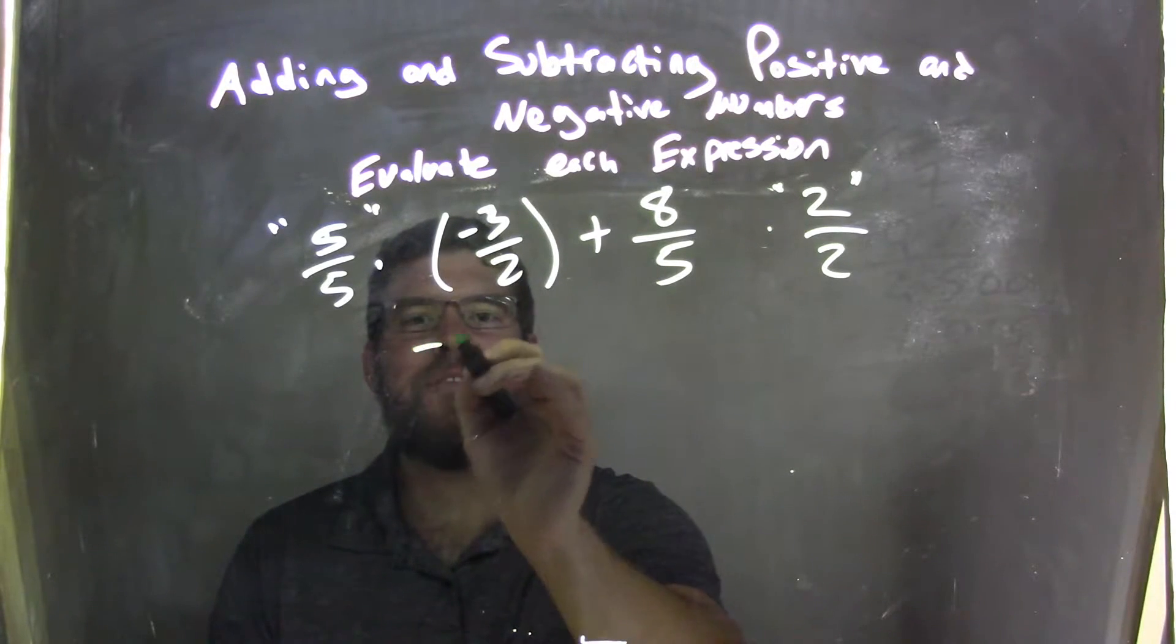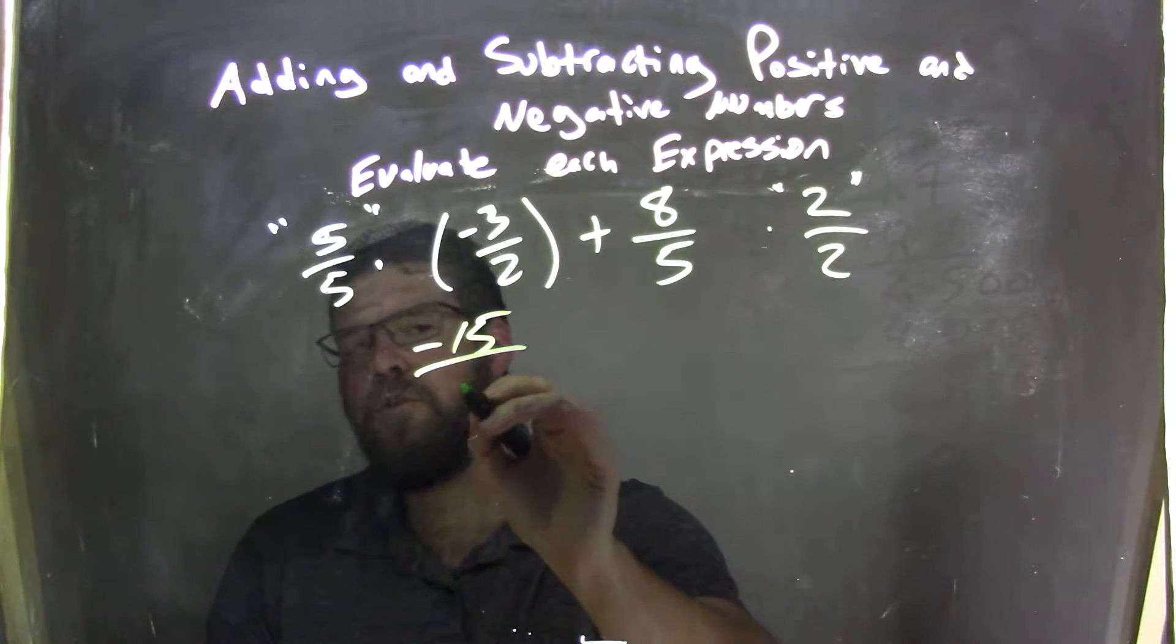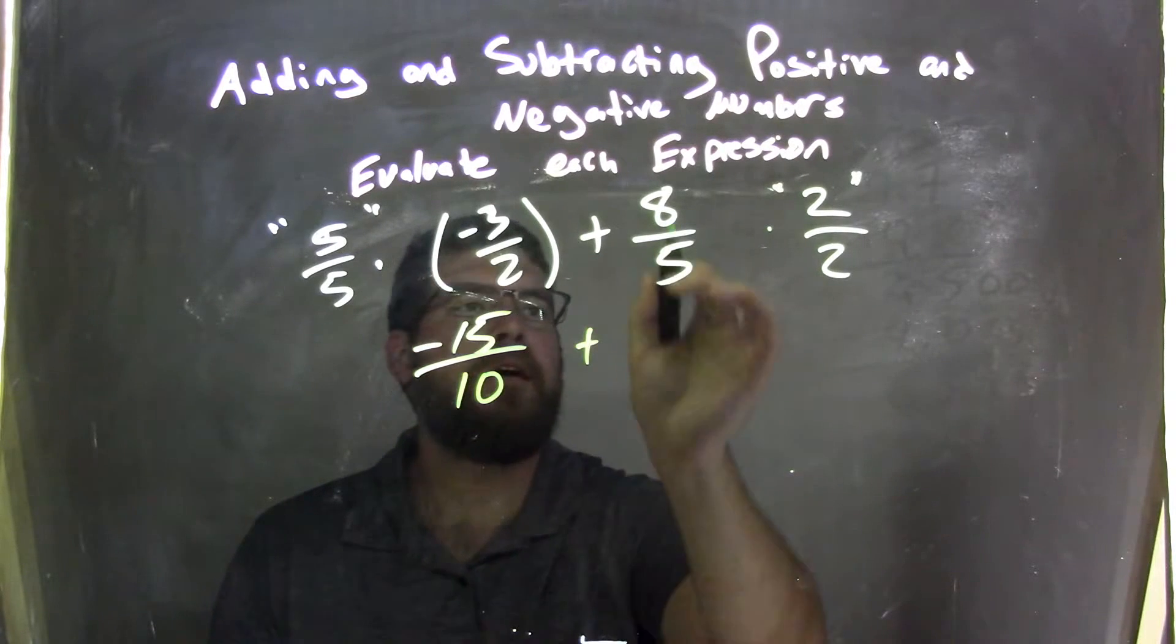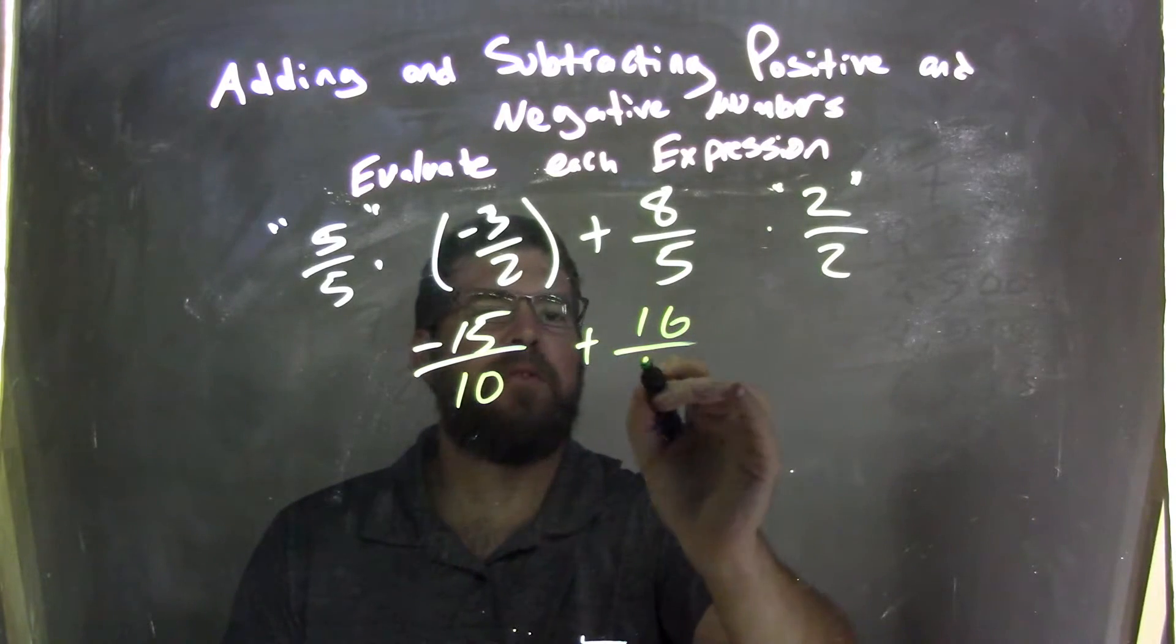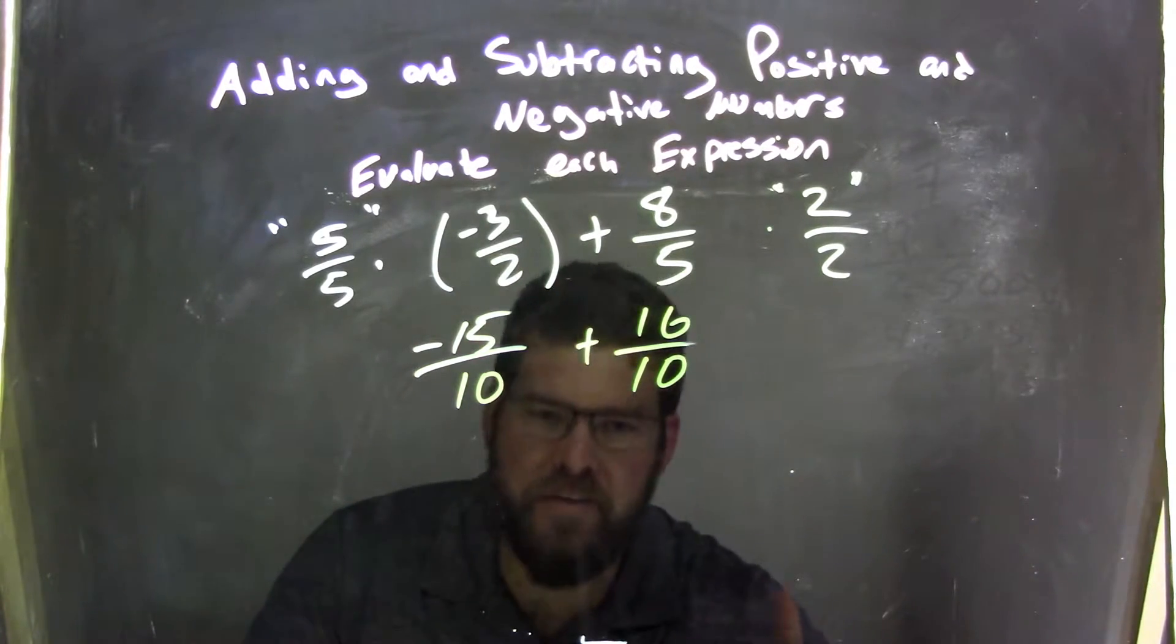Five times negative three is negative fifteen, and five times two is ten. Eight times two across the numerator is sixteen, and five times two is ten, and now we have the same denominator.